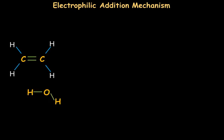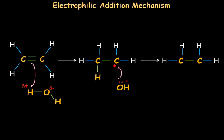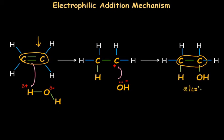Let's take another example: ethene reacting with water. In water, hydrogen is partially positive and oxygen has a partial negative charge. As before, the electron density of C=C gets attracted to the positively charged hydrogen atom and forms a bond first with hydrogen. Next, the positively charged carbon attracts the negatively charged hydroxide ion (OH⁻), which bonds to the next carbon. The C=C has changed to a saturated C–C single bond, and an alkene has changed to an alcohol because the OH group was added.